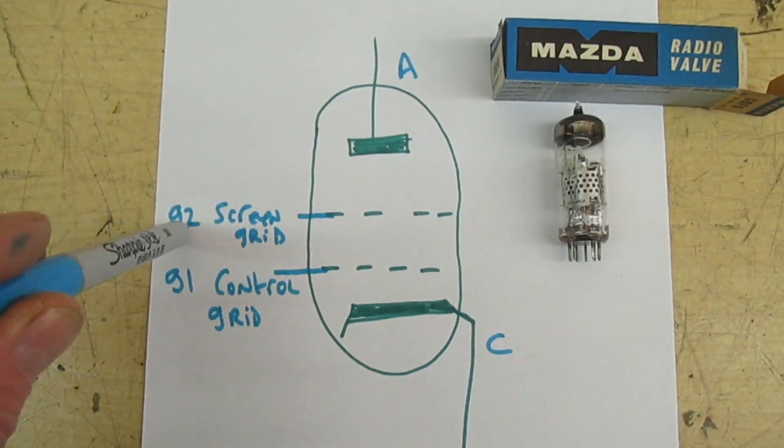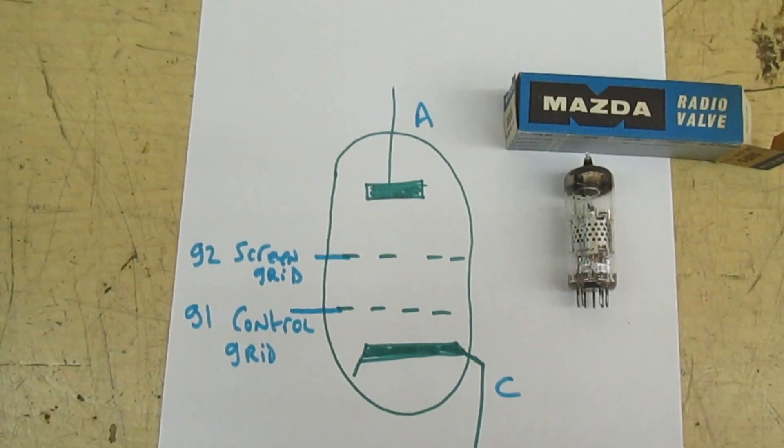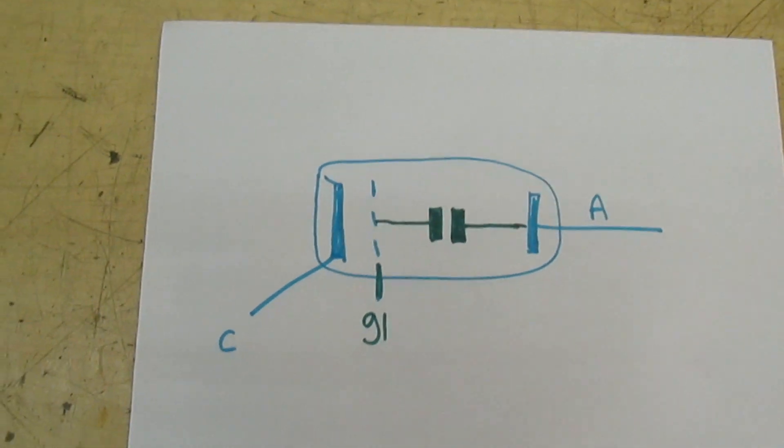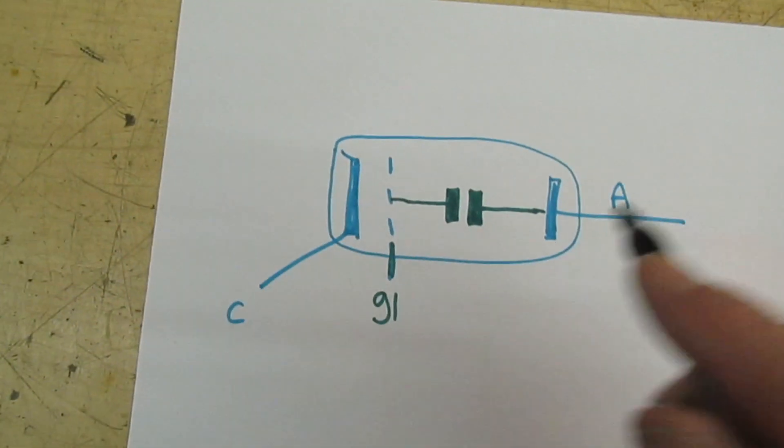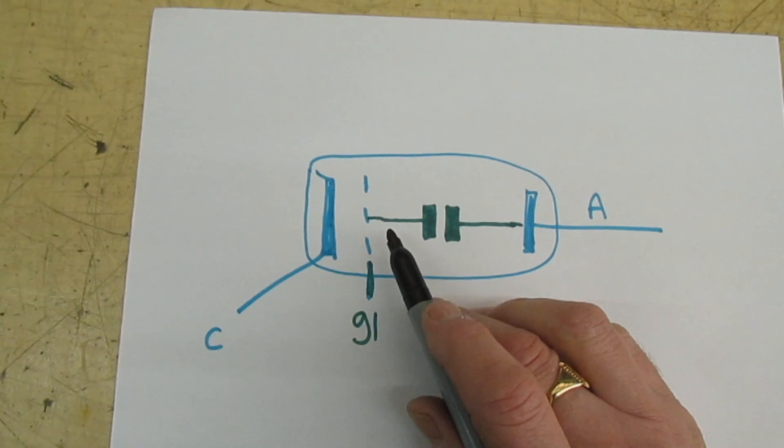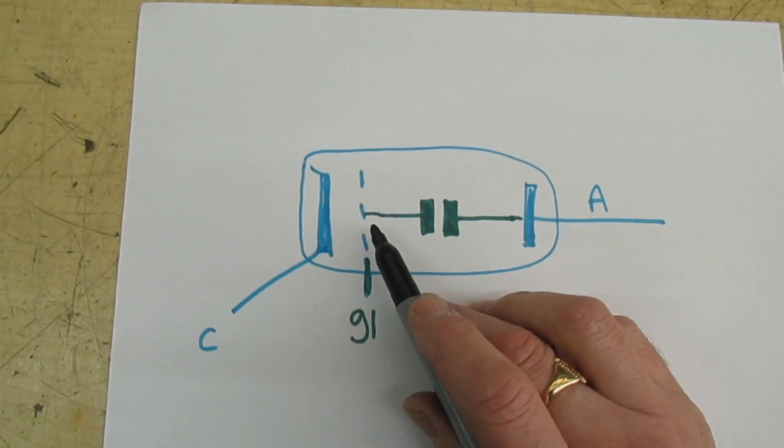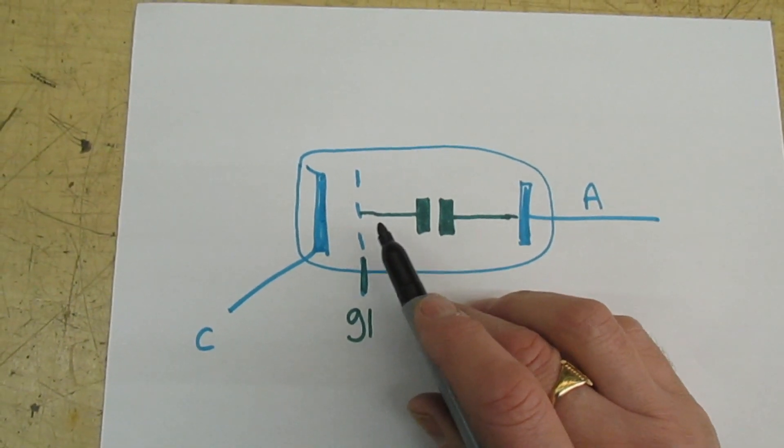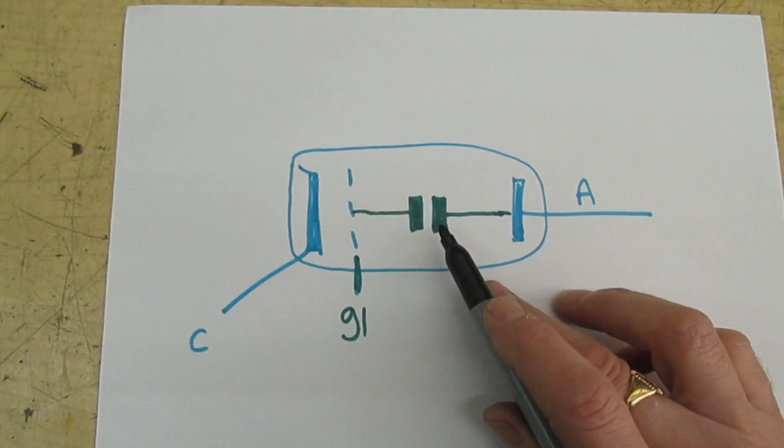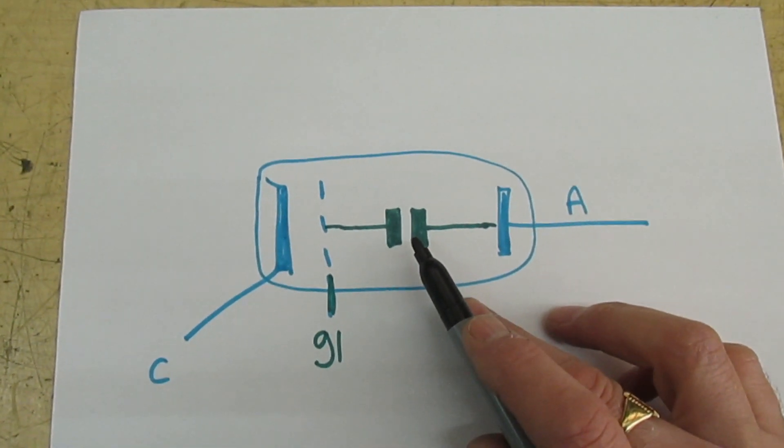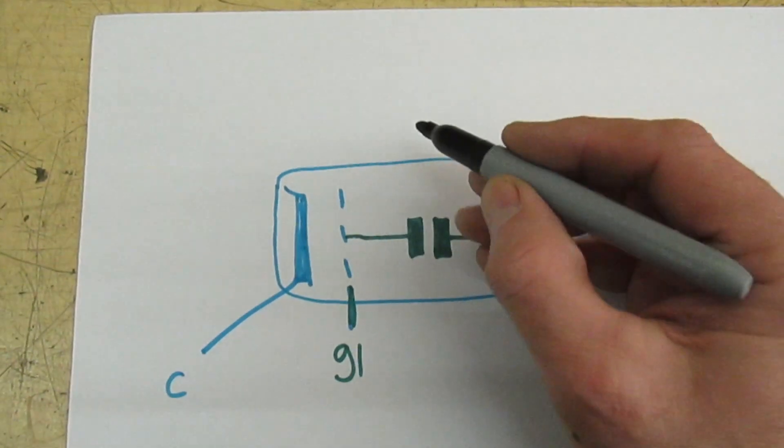I'll draw some more diagrams and then we'll look at the operation of grid 2. I've drawn the valve again, and as you can see I've drawn in the small capacitance that exists between grid 1, the control grid, and the anode.